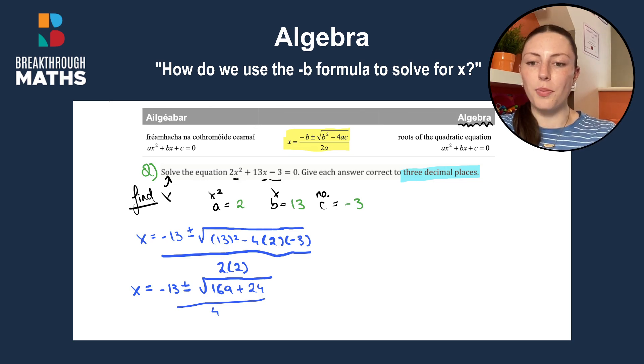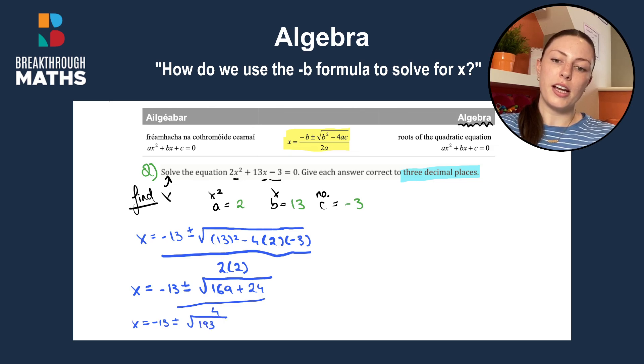And tidying that up a bit, that leaves us with x is going to be equal to minus 13 plus or minus the square root of 193 divided by 4. So that's how we tidy that up.